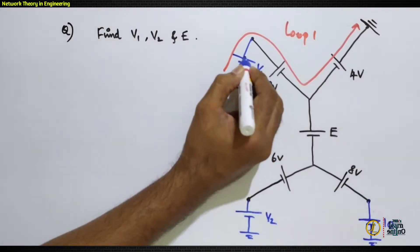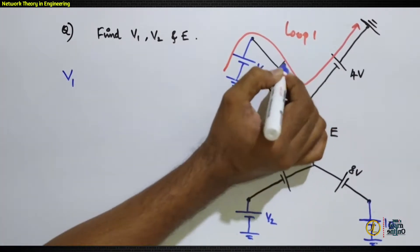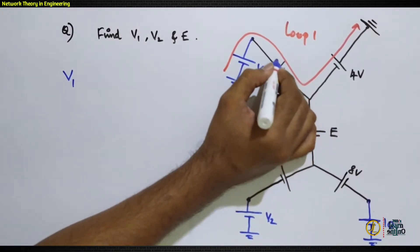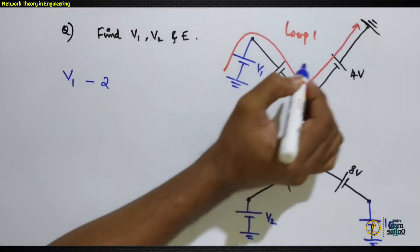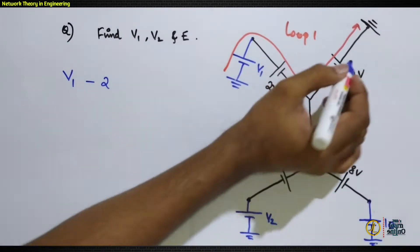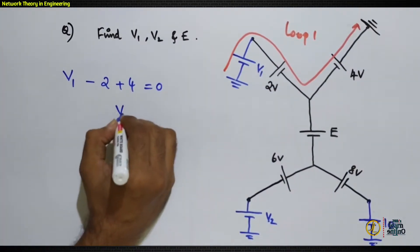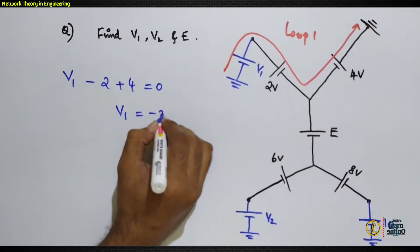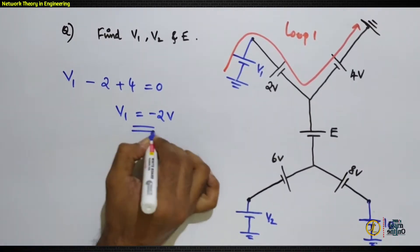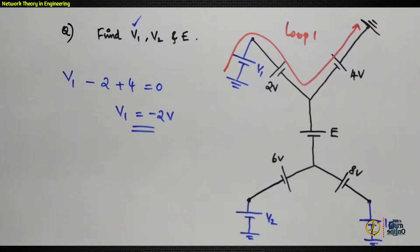Applying KVL to Loop 1: starting here, we first encounter v1 (minus to plus), so take it as +v1. Next is 2V (plus to minus), so take it as −2. Then −2V plus polarity gives +4. So the equation is: +v1 − 2 + 4 = 0, giving v1 = −2V.